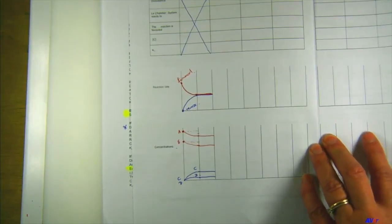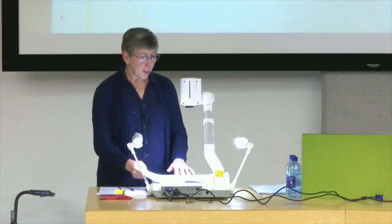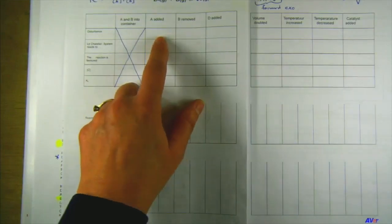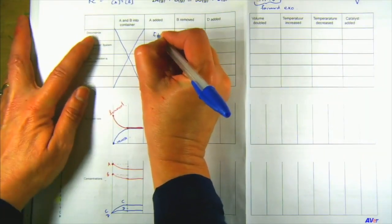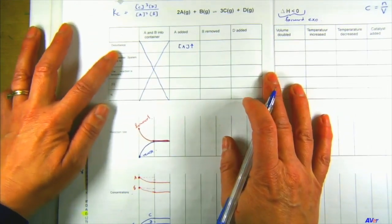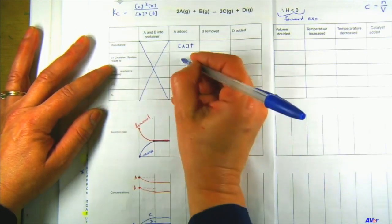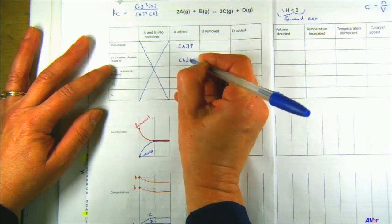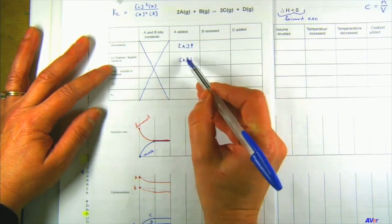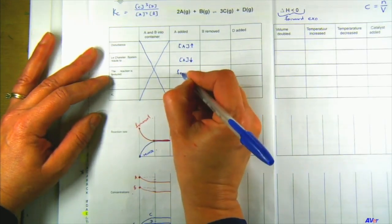Le Chatelier had nothing to say before — now we start applying it. We've got equilibrium, and now we can disturb it. The first thing we do is add A to the system. The disturbance is that the concentration of A is increasing. According to Le Chatelier's principle, the system will react to decrease A by favoring the forward reaction.